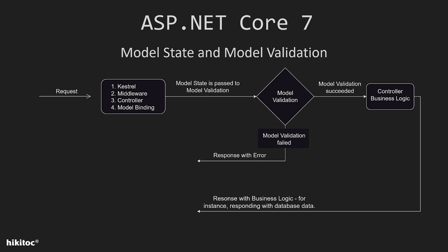Following the binding of the model, the next step involves model validation. Model validation is a process that encompasses another process or state, known as the model state. The model state is precisely verified by .NET Core and represents the object or data received within the request, having passed through model binding. After model validation, two outcomes are possible: success or error.